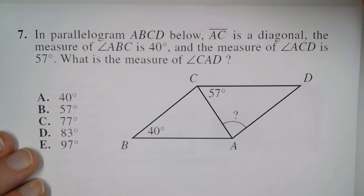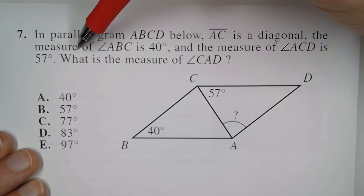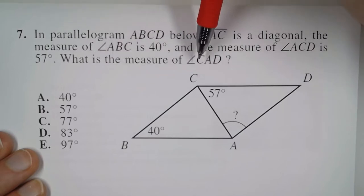In problem 7, in parallelogram ABCD, AC is a diagonal. The measure of angle ABC is 40 degrees and the measure of angle ACD is 57 degrees. What is the measure of angle CAD?